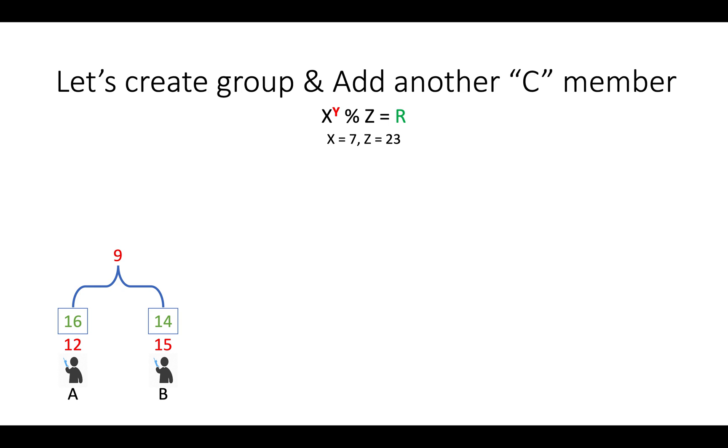Let's create group using this formula. Let's add member C. C generates secret, C calculate public info. Now, how can I add C into group? Let's replicate C. Derive key between both C. Calculate public info. Come up with common key.